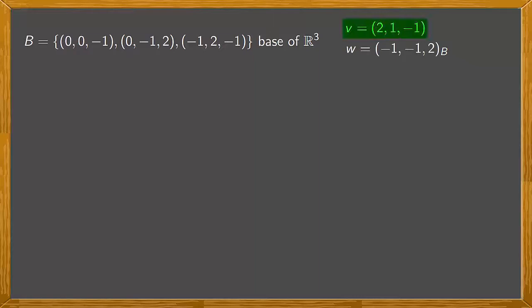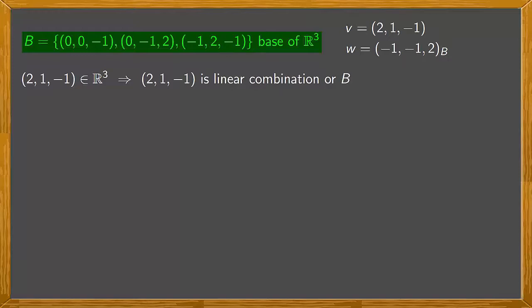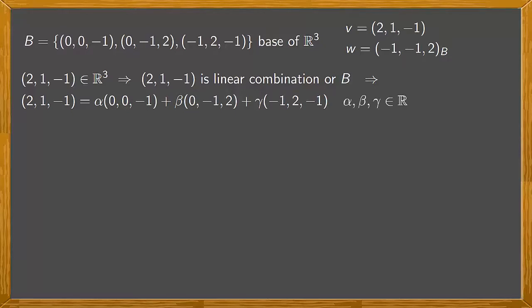First, to calculate the coordinates of V with respect to the basis. As vector V (2,1,-1) is a vector of R³, and B is a basis of R³, we know it's a generator system of R³. So we have that (2,1,-1) is a linear combination of B. Therefore, we can say that (2,1,-1) equals α times (0,0,-1) plus β times (0,-1,2) plus γ times (-1,2,-1) for certain values of α, β and γ. We already know that since B is the basis, these values are unique, and they're the coordinates of V with respect to B that we have to calculate.